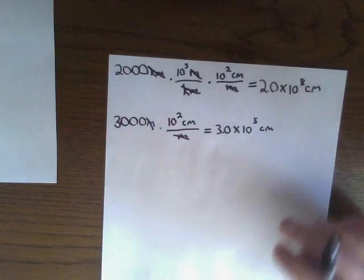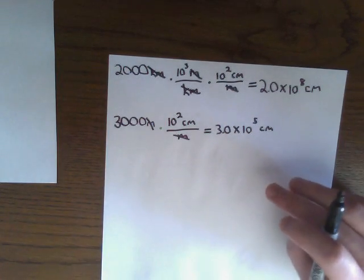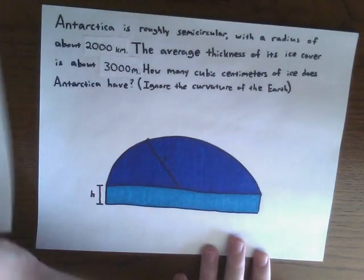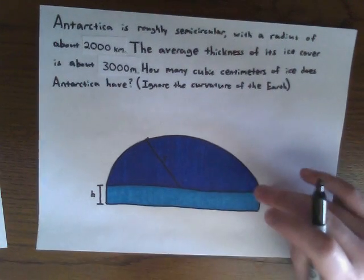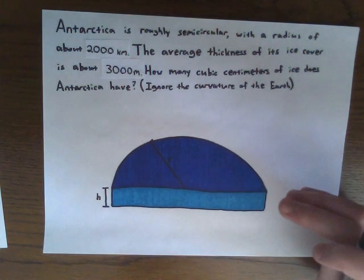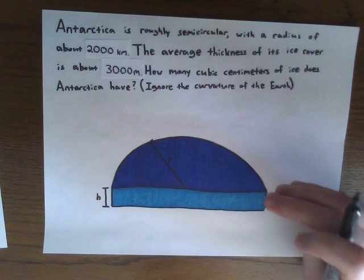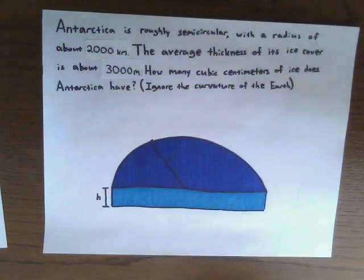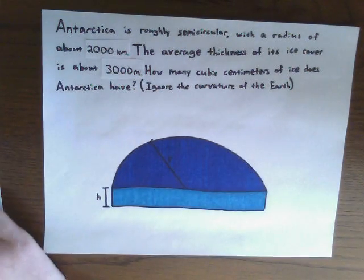Now for our final step, we need to find a formula to find the volume of our semicircular object. Using this graph, this diagram, we can say that this almost looks like a cylinder. It's just a semicircle instead of a full circle. So what we can do is use that information to develop a formula for our volume.